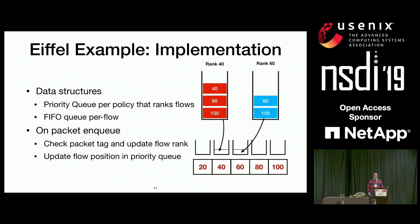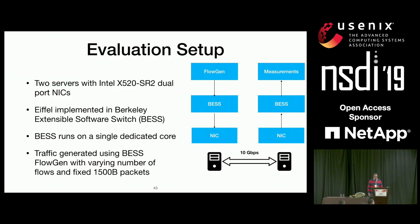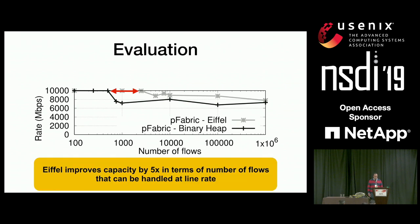We evaluated Eiffel in multiple settings: user space and kernel, compared to multiple state-of-the-art schedulers. Here I'll focus on the PFabric implementation. We implemented a PFabric instance using binary heaps and using Eiffel in BESS, on lab machines connected with 10 Gbps links, deployed on a single core. The x-axis is the number of flows, and the y-axis is the aggregate rate of all flows — ideally a flat line independent of flow count. With Eiffel, we improve the maximum capacity of the system by 5x in terms of the number of flows it can support.